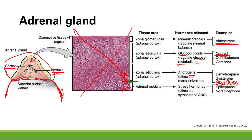The adrenomedulla is responsible for making stress hormones — the catecholamines that stimulate the sympathetic nervous system. Those are epinephrine and norepinephrine, which stimulate alpha and beta receptors to cause sympathetic stimulation.